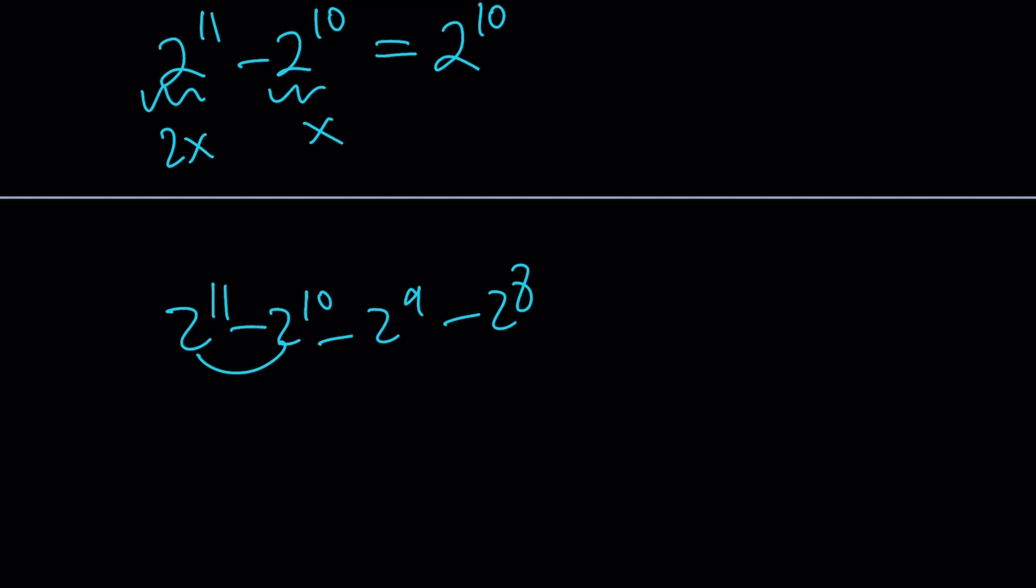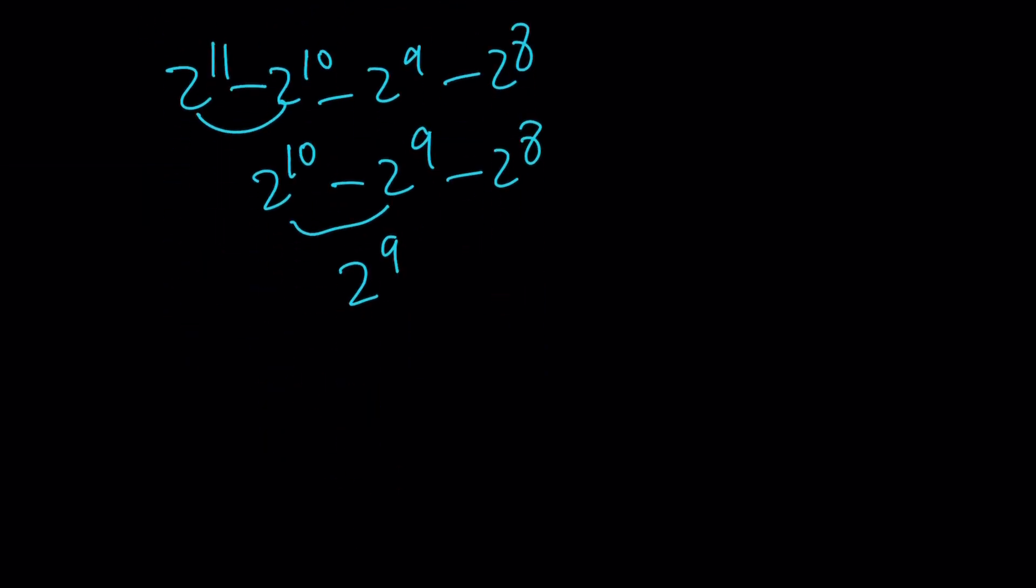Now let's go ahead and simplify it that way. 2 to the 11 minus 2 to the 10 is 2 to the 10, minus 2 to the 9 minus 2 to the 8. Now if you take these two, 2 to the 10 minus 2 to the 9 is always going to be the smaller power. Remember that. It can't be 2 to the 10th, obviously, that means 2 to the 9th is 0, that doesn't make sense. And now we have 2 to the 9 minus 2 to the 8th, and that is equal to 2 to the 8th. This is our numerator.